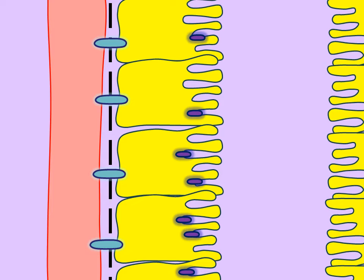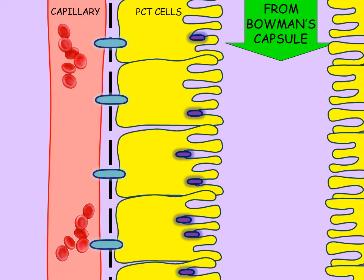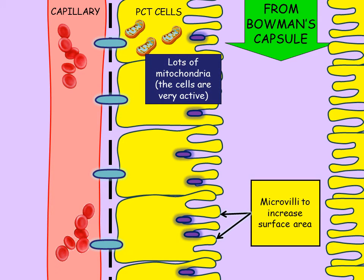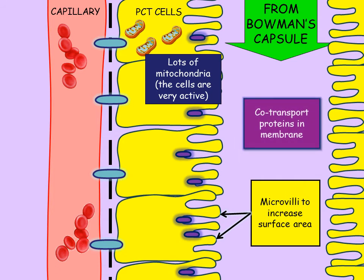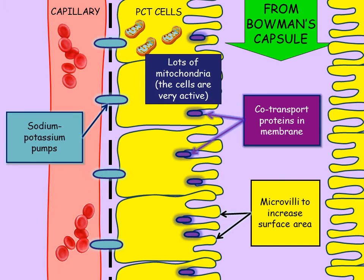This slide shows another view of the proximal convoluted tubule. On the left hand side we have the capillaries; the other structures are the proximal convoluted tubule cells. Coming down from the Bowman's capsule on the right hand side is the lumen of the proximal convoluted tubule, which contains some of those molecules filtered out during ultrafiltration. The PCT cells are adapted in many ways: they have many mitochondria because they are active, the membrane is folded into microvilli to increase surface area, there are cotransporters in the membrane, and sodium-potassium pumps.